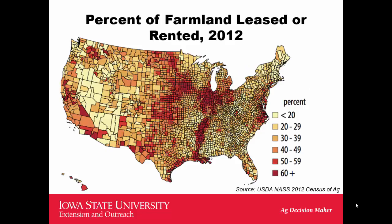This map, which is the 2012 Census of Ag Data, shows that the USDA data for the north central Iowa area that I work in, as well as northwest Iowa, is heavily composed of rented land, a large percentage of which is cash rent.